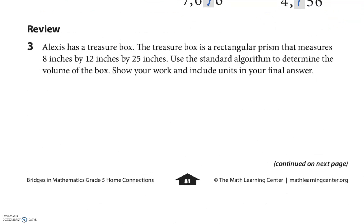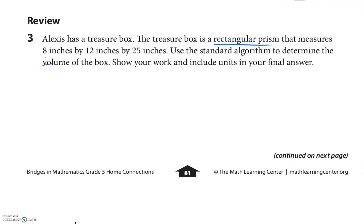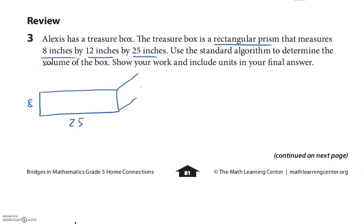They give us some review stuff — remember, try this on your own first. Alexis has a treasure box, which is usually a rectangular prism. The treasure box is a rectangular prism that measures 8 inches by 12 inches by 25 inches. Use the standard algorithm to determine the volume of the box. I'm going to say it's 8 inches high, probably 25 inches wide, and 12 inches for the other dimension — it's three-dimensional.